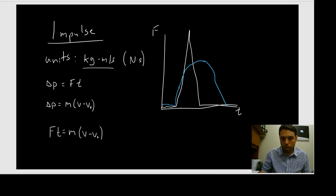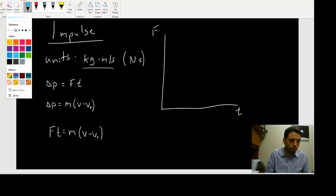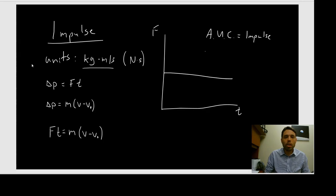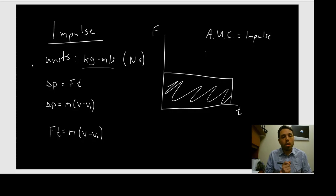Let's talk about the force-time graph. A force-time graph tells us that the area under the curve equals impulse — it's force times time. So if I have a flat line on a force-time graph that stops at a certain point, that rectangular area is my impulse, delta P equals force times time. That's going to be important to remember: the area under the curve of a force-time graph equals impulse.